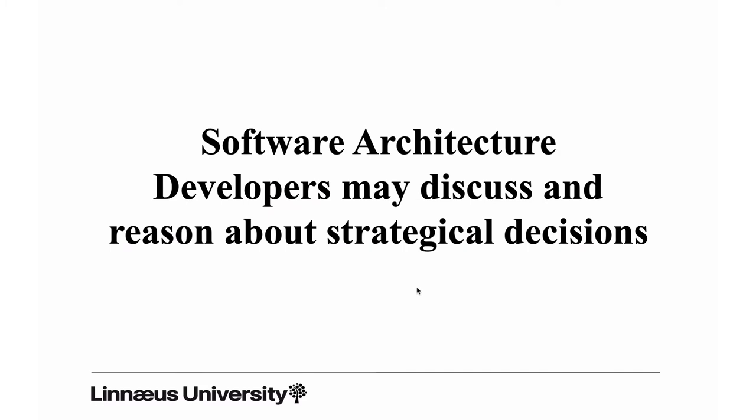And the answer is software architecture, because software architecture provides developers with the tools necessary to discuss and reason about these strategic decisions — that's the level where you can look at design options, analyze the impact, trace dependencies, etc. Architecture provides developers with new tools to start dealing with certain types of questions early in the design process, before you spawn off sub-projects that work more or less independently.